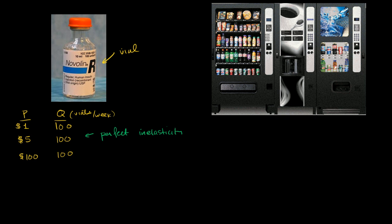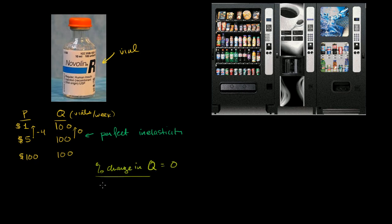And if you want to do the computation, you could figure out the demand elasticity for when you're going from a price of $5 to $1. So the price went down by 4, and the quantity changed by 0. So your percent change in quantity is equal to 0, and your percent change in price — if you use the averaging method — would be going down by 4 over an average of 2.50. It'll be a fairly large number, but 0 over anything is still going to be 0. So your elasticity of demand in this situation is 0.